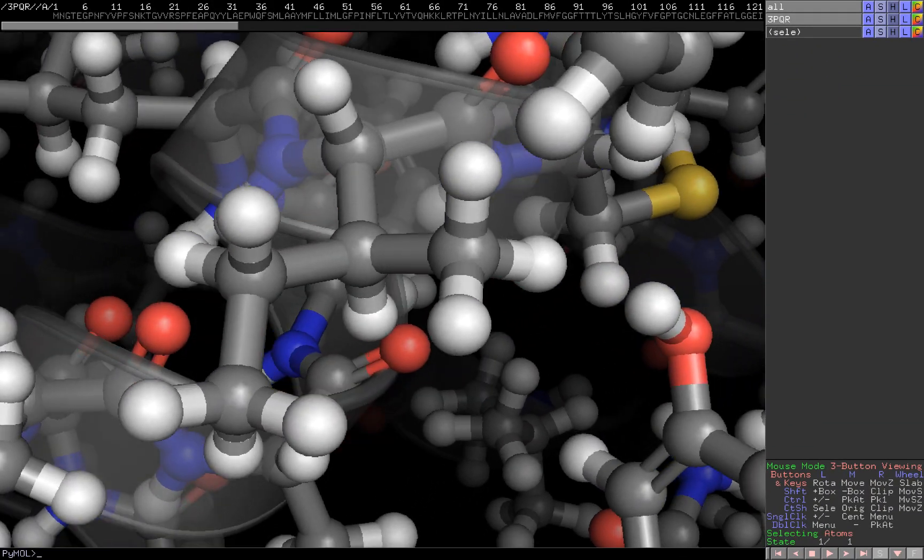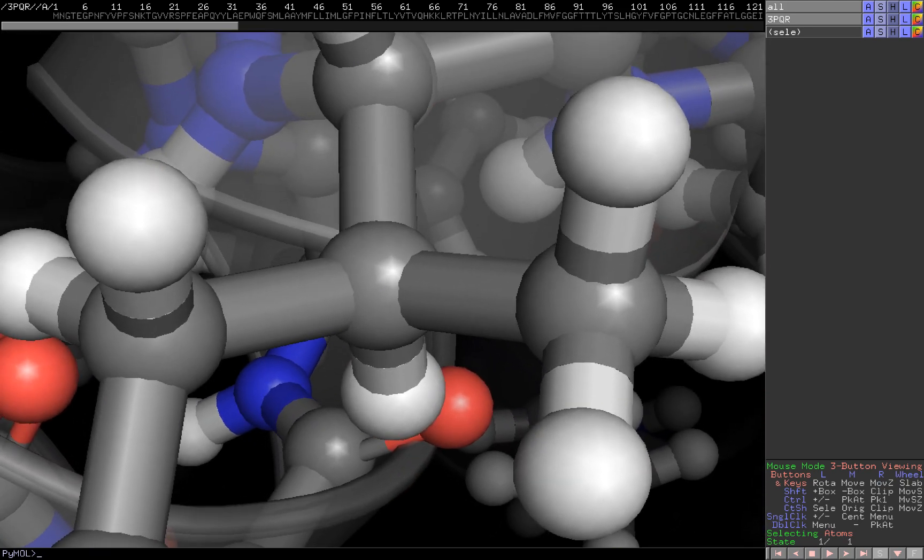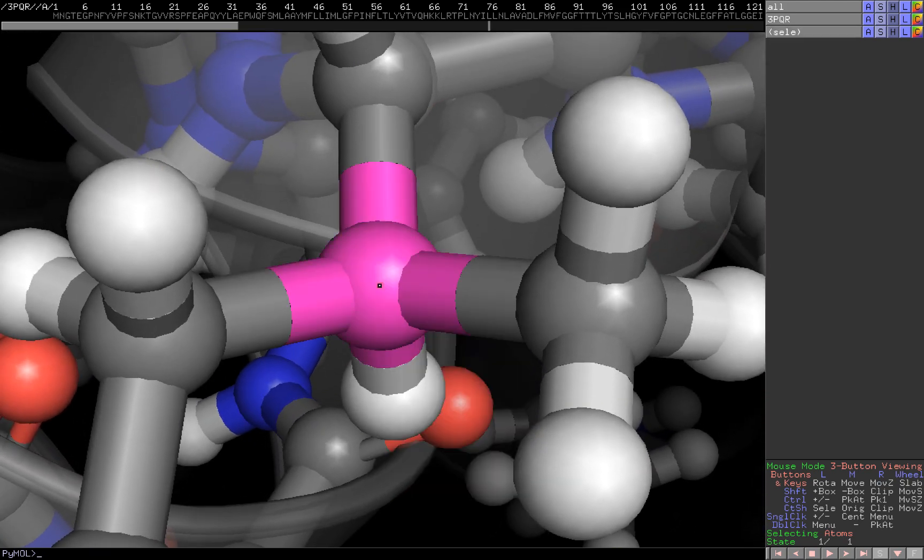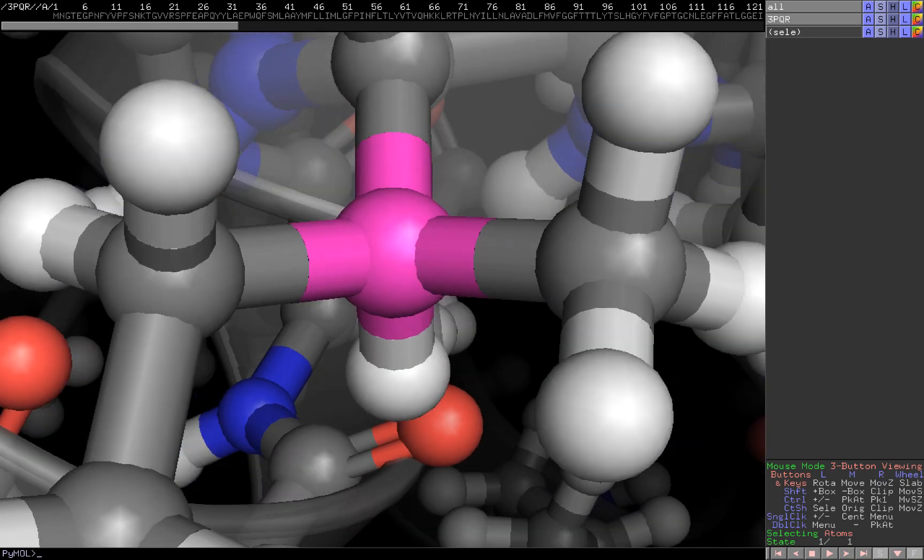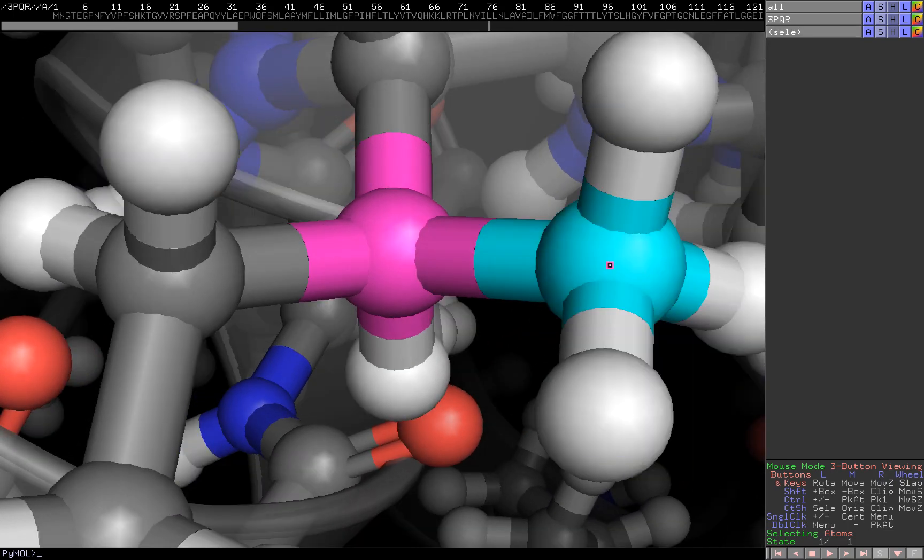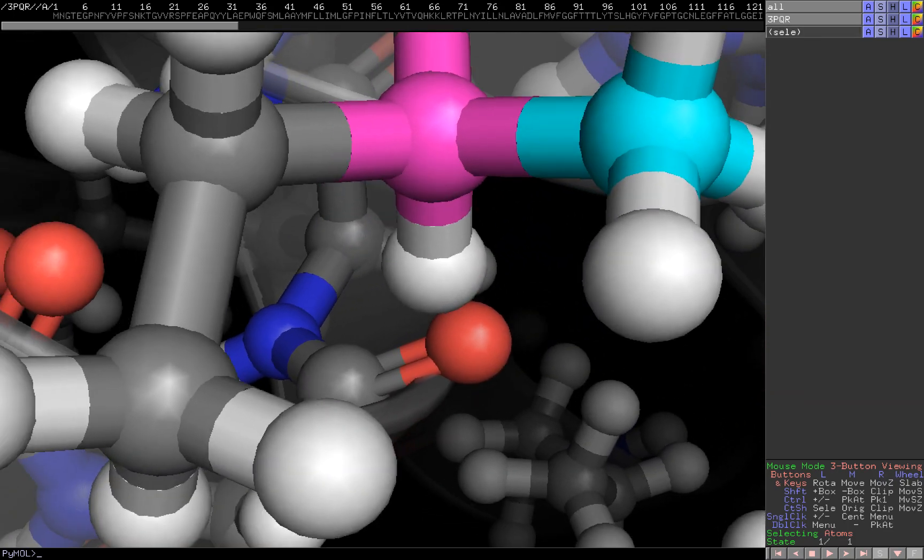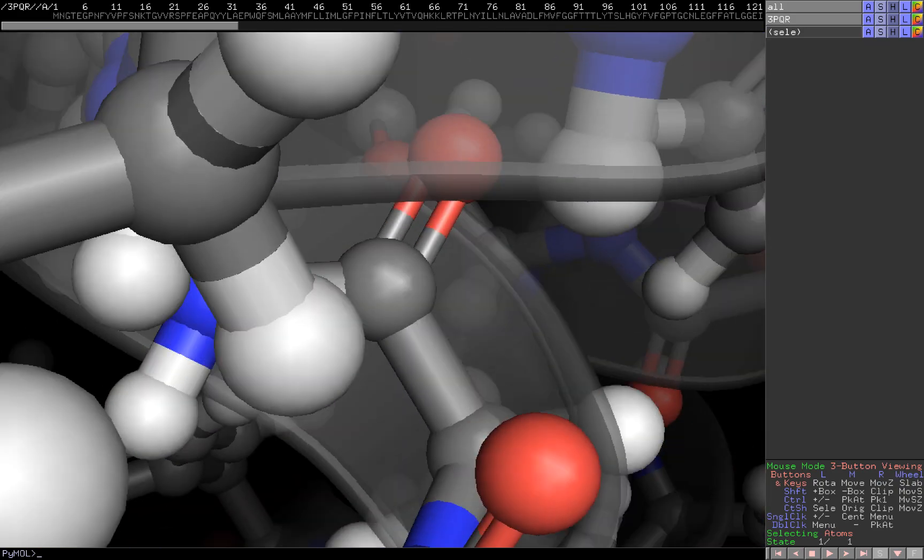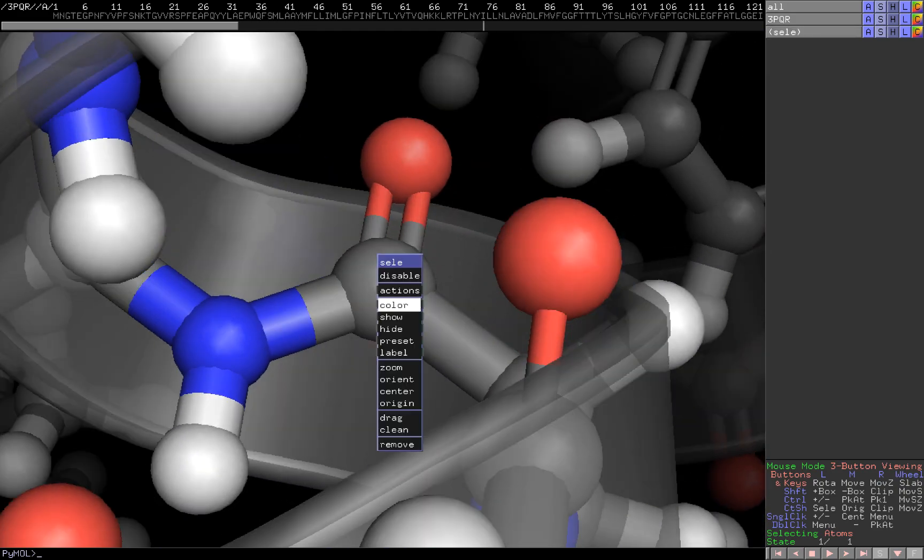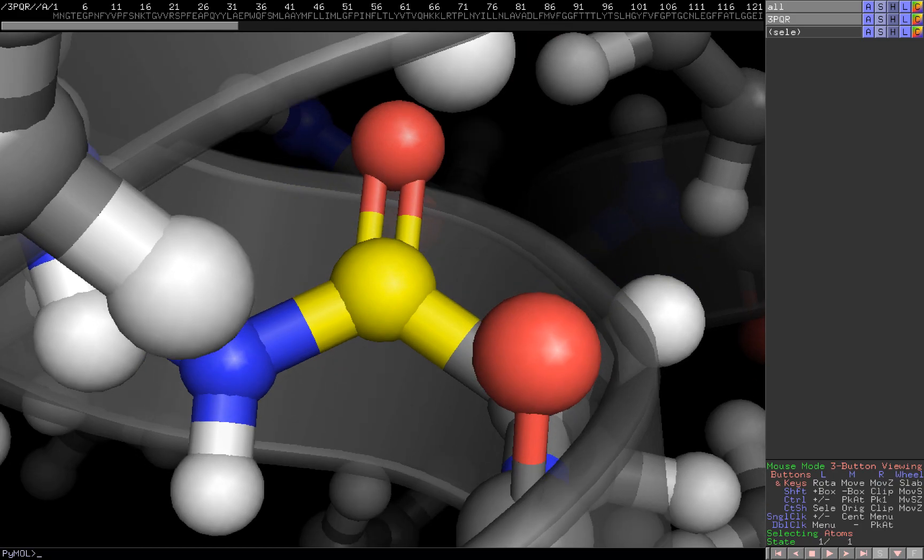When we look at the gray carbons another pattern emerges. I'm changing the colors here of the carbons to help us see the number of bonds that they make. Wherever we look carbon has four bonds. Sometimes we see four single bonds, but sometimes we see two single bonds and a double bond.